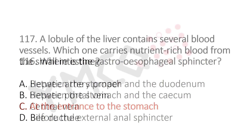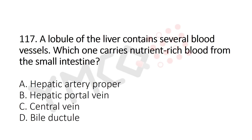Now Question 117: A lobule of the liver contains several blood vessels — which one carries the nutrient-rich blood from the small intestine? Option A: hepatic artery proper, Option B: hepatic portal vein, Option C: central vein, Option D: bile ductule. The answer is Option B: hepatic portal vein.